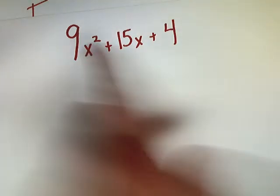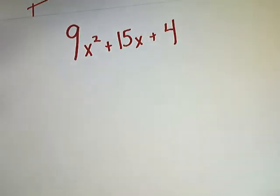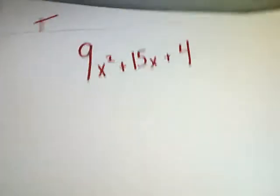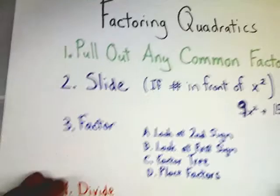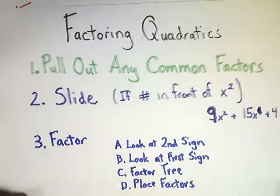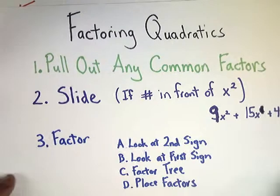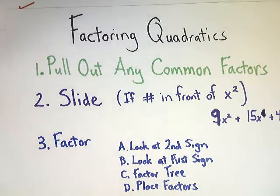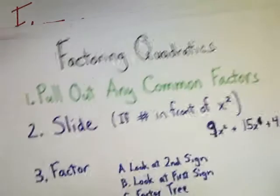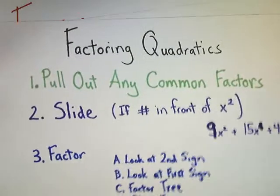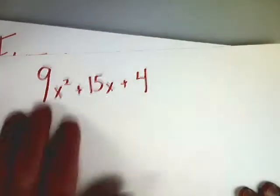Generally, you start out with there's no number in front of x squared. The first thing that I need to do when I'm factoring quadratics or quadratic expressions is pull out any common factors. So if a number goes into all three of the terms, pull out any common factors that you have.